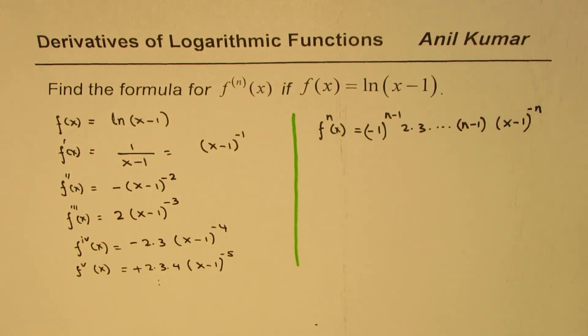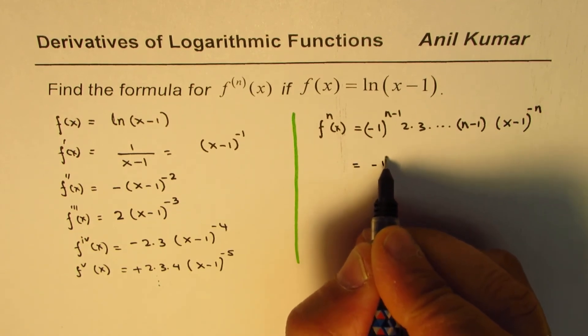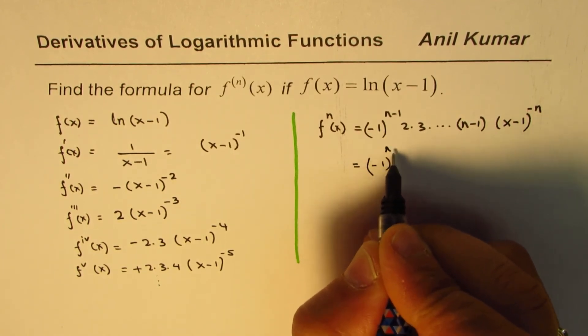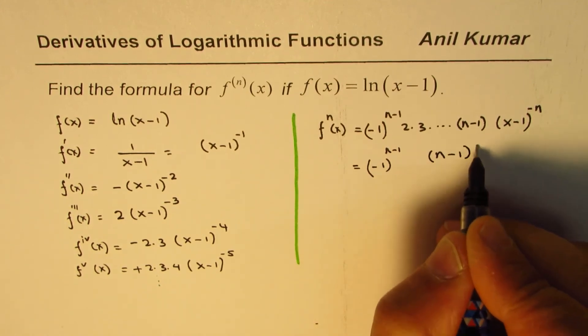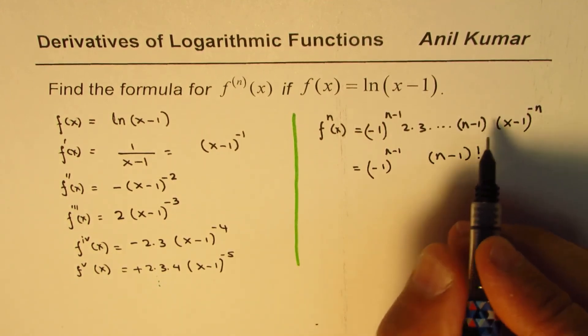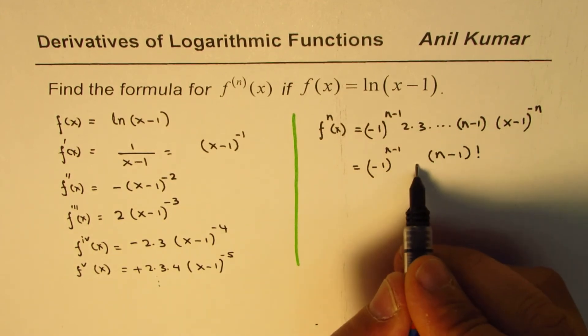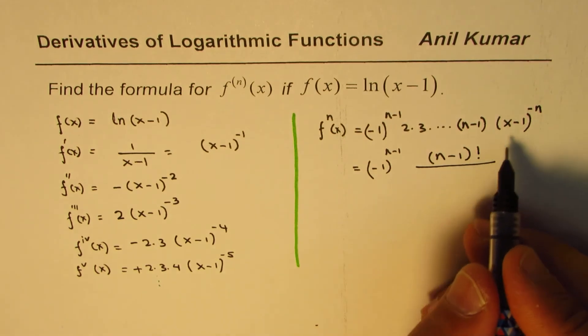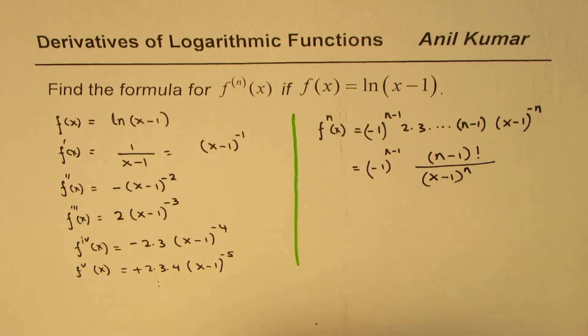So that is how you could write the general formula. We could also use factorial notation to write this. In factorial notation, this product could be written as (n-1)!, which is (n-1) times (n-2) times and so on till 1, divided by (x-1) to the power of n.